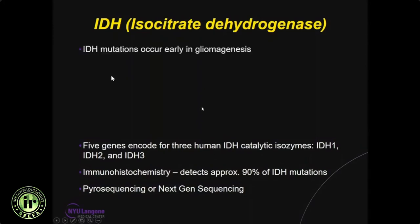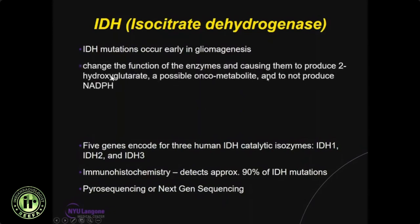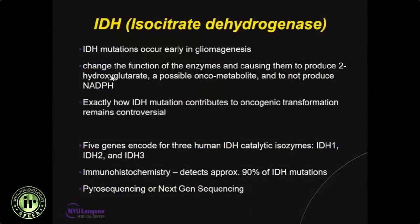IDH mutation occurs early in gliomagenesis, changes the function of enzymes causing them to produce 2-hydroxyglutarate — a possible oncometabolite — and reduces NADPH production, which normally protects cells from aggressive features. Exactly how IDH mutation contributes to oncogenic transformation remains controversial.